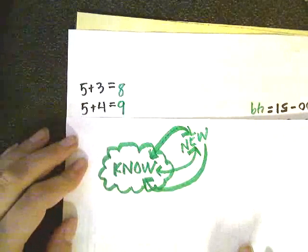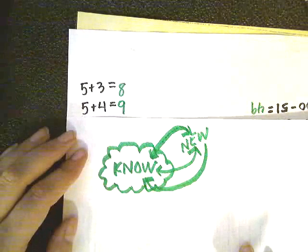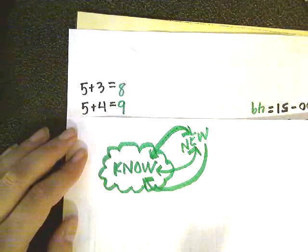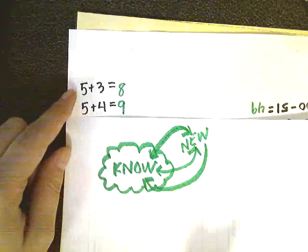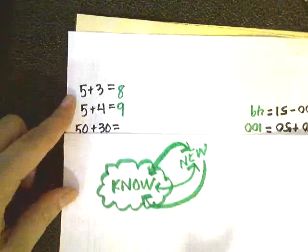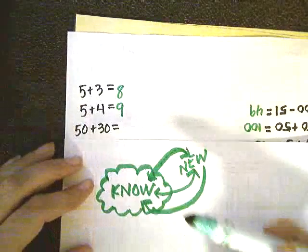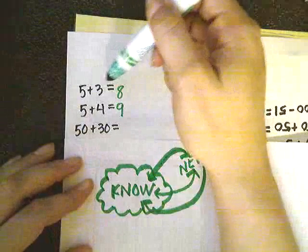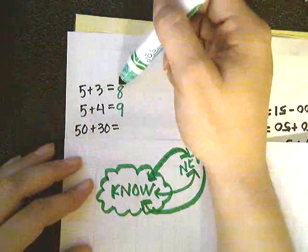So in Room 20, we make a lot of effort to connect the new things we're learning with what we already know. This game called Number Strings is a way that you can encourage your child to connect the new with the known.